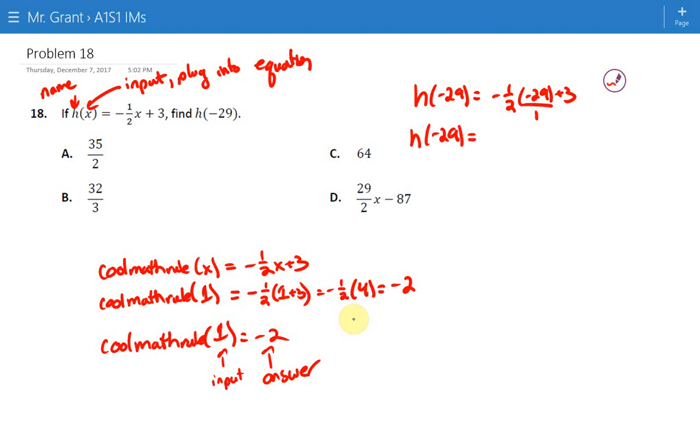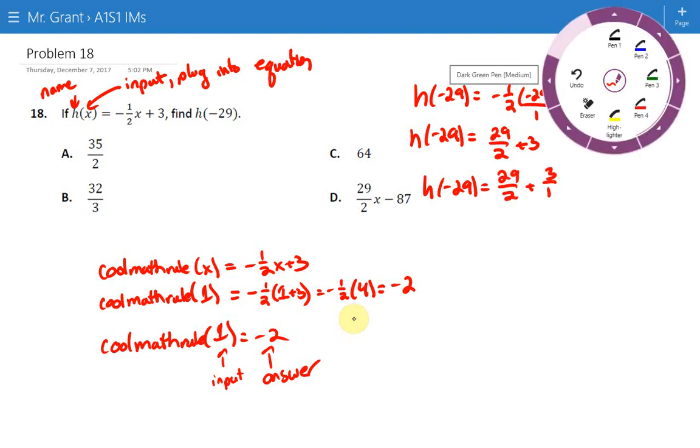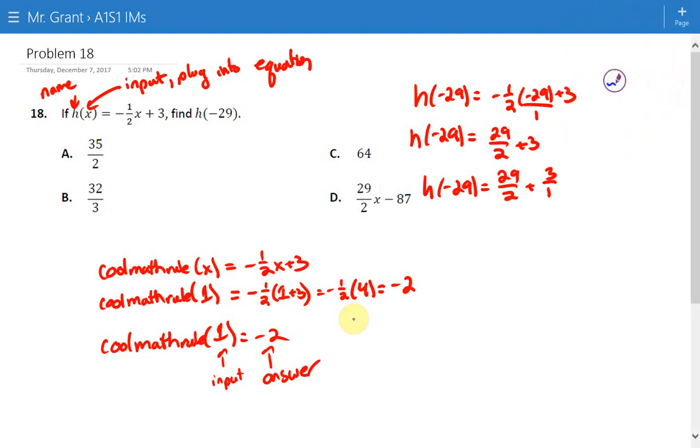Maybe we'll put this over one. Negative times a negative is a positive. Right, so H of negative 29 is found by doing 29 over 2 plus 3. Let's think of that as 3 over 1. And of course in order to add fractions we need common denominators. So I'll put a 2 on there.